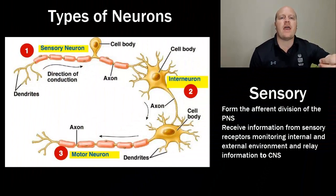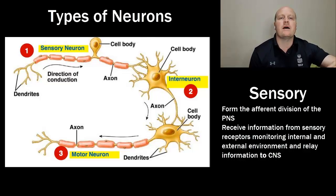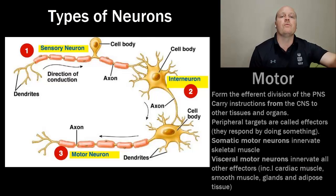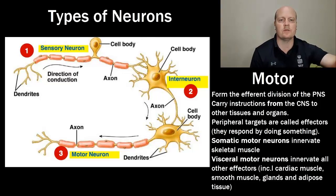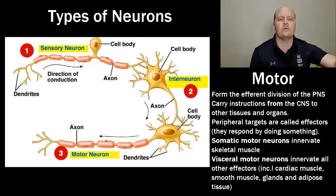We've got three main types of neurons. Sensory neurons are in the afferent division of our peripheral nervous system. They receive information from sensory receptors about our internal and external environment and relay that to the central nervous system. Motor neurons carry instructions from the central nervous system to other tissues, organs, and organ systems. The targets are called effectors because they cause an effect and respond by doing something.